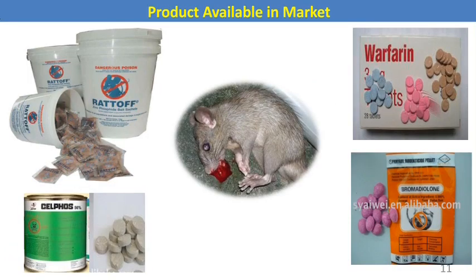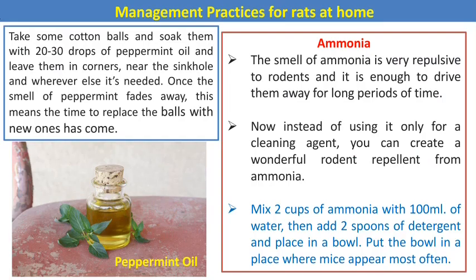These are some products available in markets as rodenticides. For home practices: first, use peppermint oil — soak cotton balls with 20 to 30 drops of peppermint oil and place them in corners near sinkholes and wherever needed; replace balls when the smell fades. Second, use ammonia — its smell is very repulsive to rodents. Mix 2 cups of ammonia with 100 ml of water, add 2 spoons of detergent, place in bowls where mice appear most often.